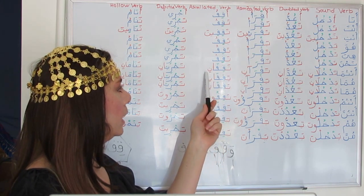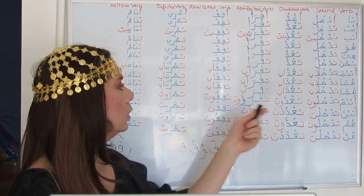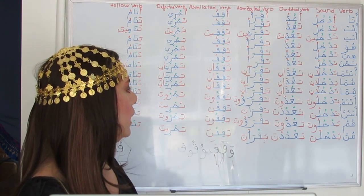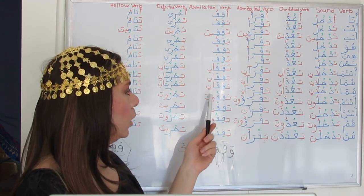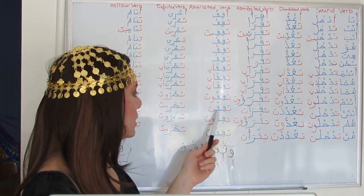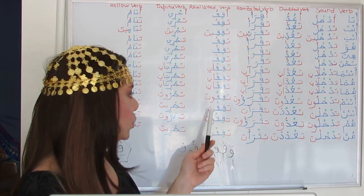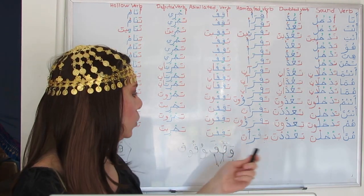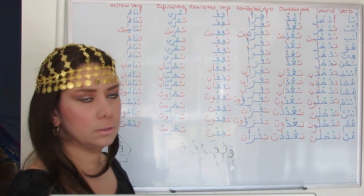Antuma taqifani — the dual suffix 'ani.' Huma yaqifani. Huma taqifani. Antum taqifuna — Waw matching the Dhamma. Antunna taqifna — the Nun preceded by Sukun. Hum yaqifuna. Hunna yaqifna. Many repetitions in this table as well.